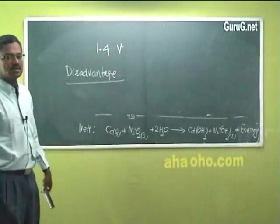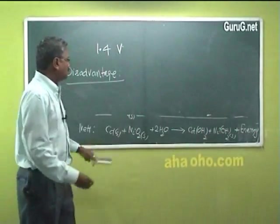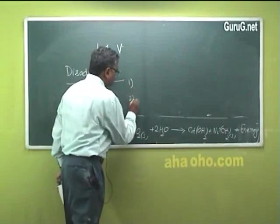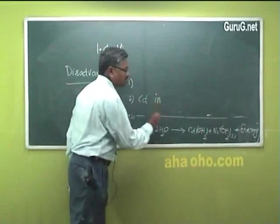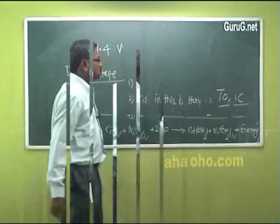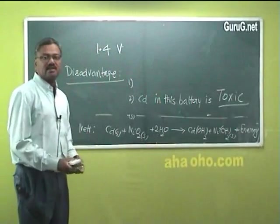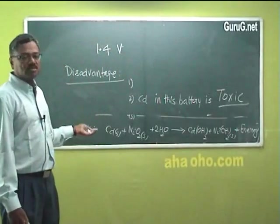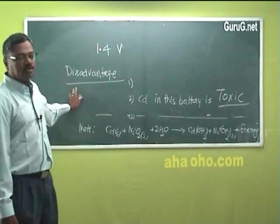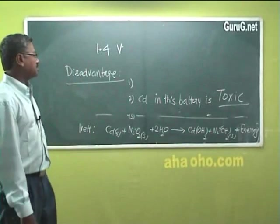The disadvantages: it is rather expensive and the cadmium in this battery is toxic. Uses: we use in calculators, flashlights, torches, in any electrical appliances. We can make use of this nickel cadmium battery.